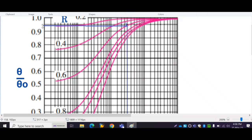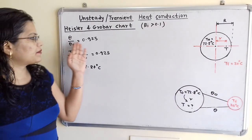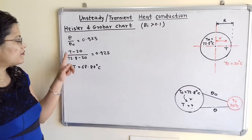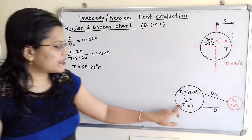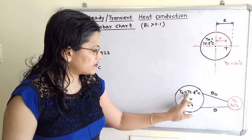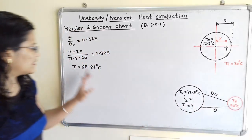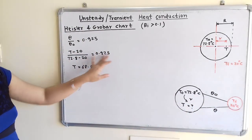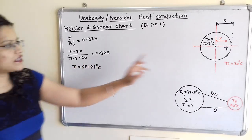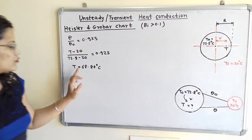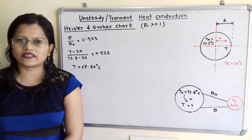The point of intersection gives θ/θ₀ = 0.925. Therefore, (T − 20)/(T0 − 20) = (T − 20)/(72.8 − 20) = 0.925, and therefore the temperature T at distance r = 0.9 cm is equal to 68.84°C.